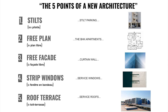The stilts have become stilt parking — now part of all our master plans and bylaws. The free plan has become a collection of rooms: the BHK apartment. The free facade has essentially become wafer thin — it's all about curtain walling. The strip windows have become service windows, increasing the use of internal space for equipment. And the roof first became the site for air conditioners, and is now slowly being taken up by solar roofs.